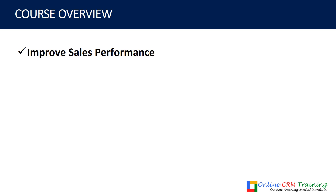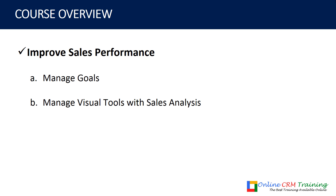The next step is how to improve sales performance. First, you will learn how to manage goals — how to create measurable and manageable goals, use goals by fiscal year, specify definitions and goal metric records, analyze individual and organizational progress by creating goal hierarchies, and how to use roll-up queries.